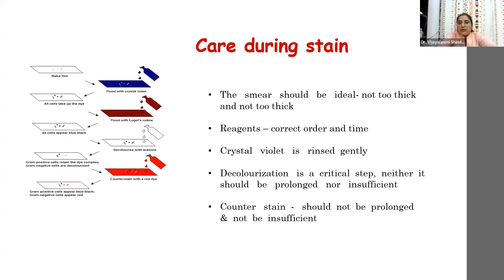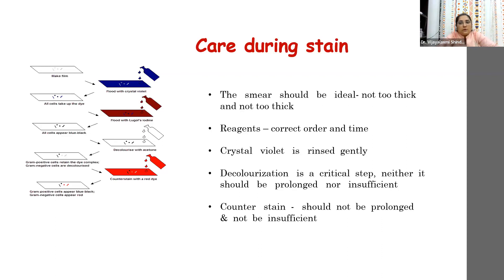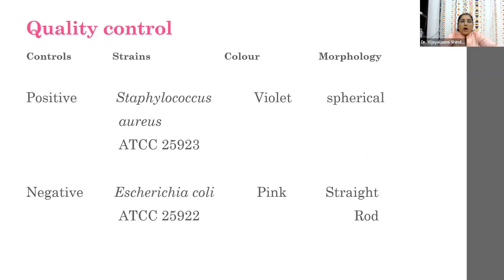Decolorization is a critical step. Too much decolorization will wash away the smear; the primary stain may get washed off. The end point is when the excess visible color on the smear disappears. The counter stain step should also not be prolonged — if you overdo the counter stain after doing the first three steps correctly, you hamper the quality of the smear. All steps, correct order, and timing must be followed properly.